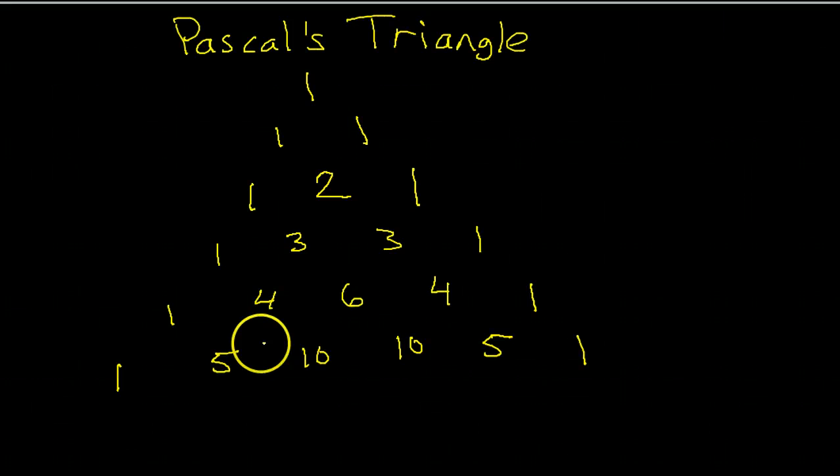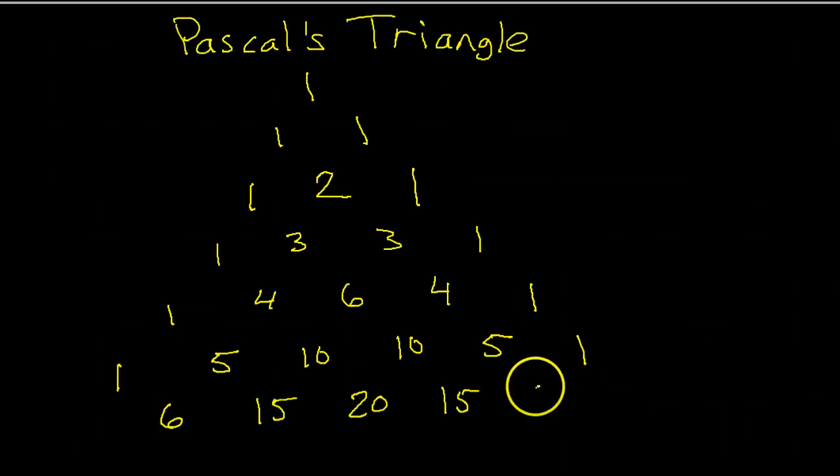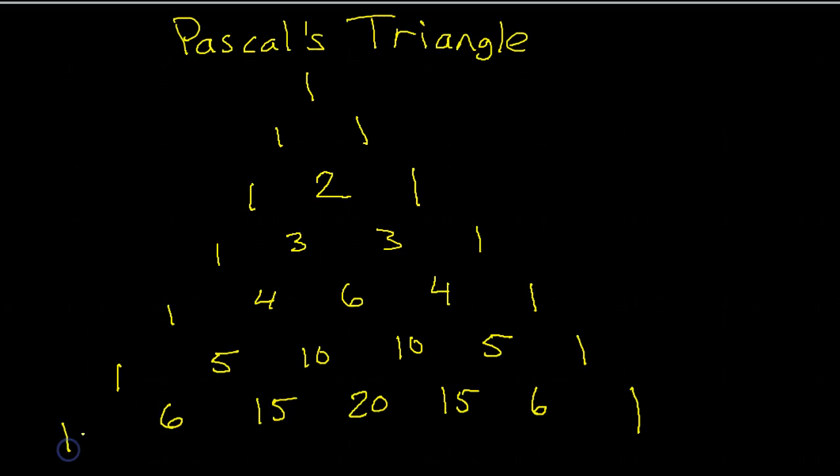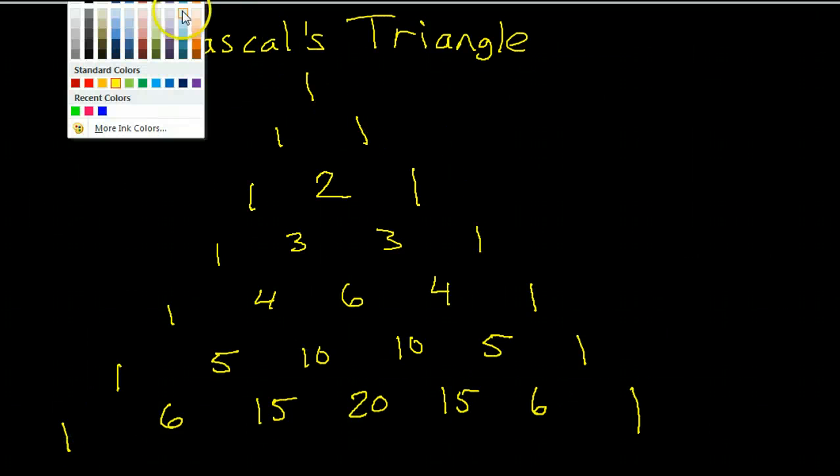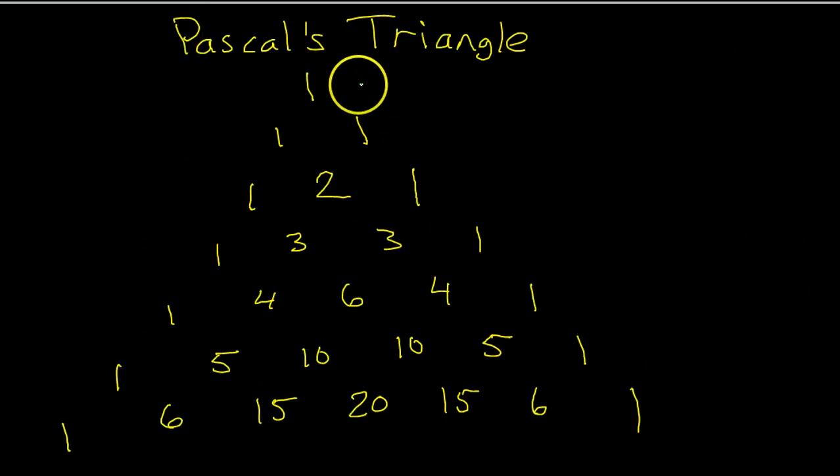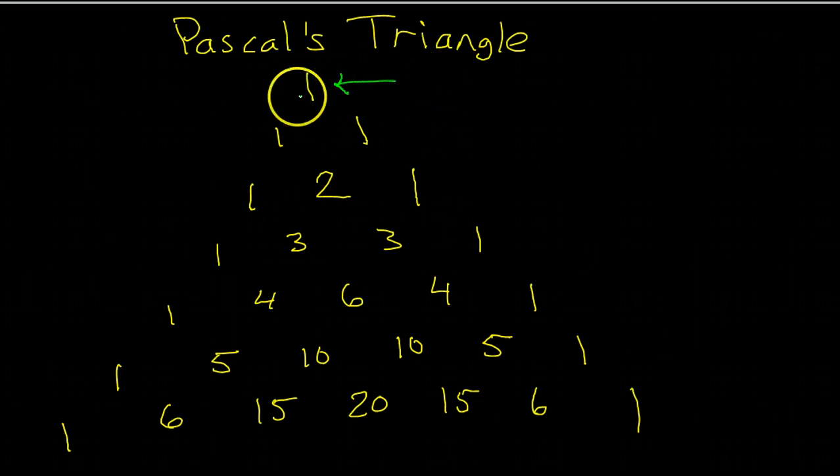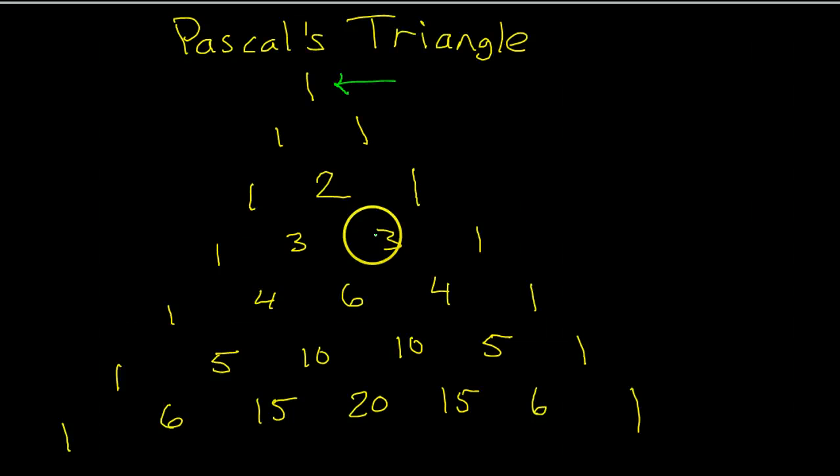I'm going to just go one more row, and then that'll be enough. Add these up, you get six. Add these, 15. Ten plus ten, 20. Ten plus five, back to 15. And five plus one, it's back to six. Put the ones on the end. Now, the point of Pascal's triangle is, if I want to do binomial expansion, in other words, a binomial raised to a power, these numbers will wind up being, each row represents the coefficients of a binomial once you expand it.